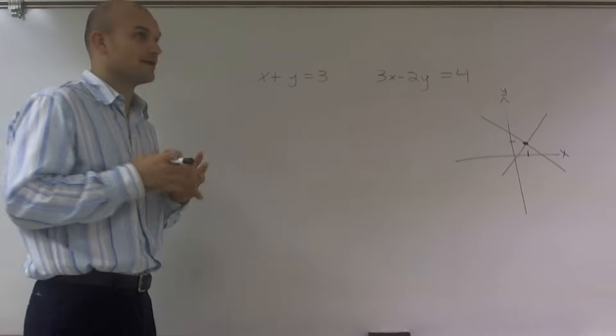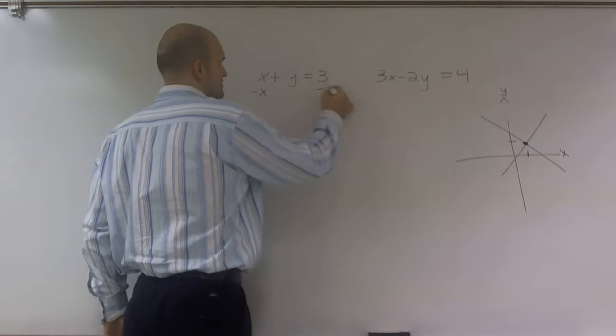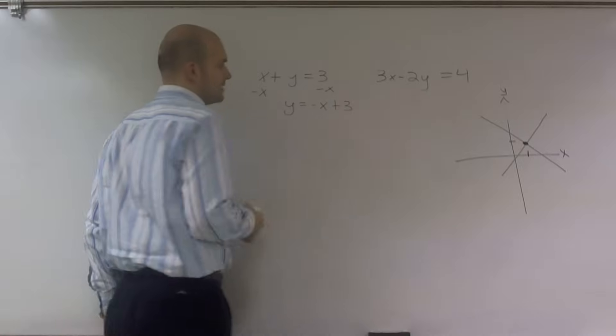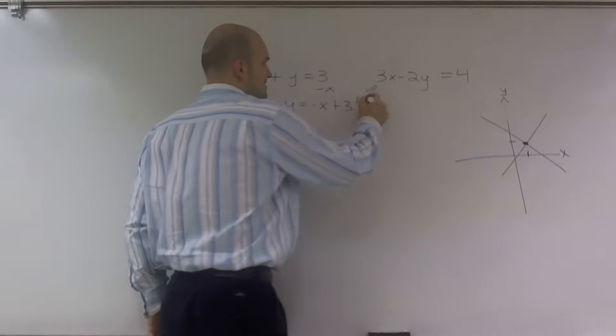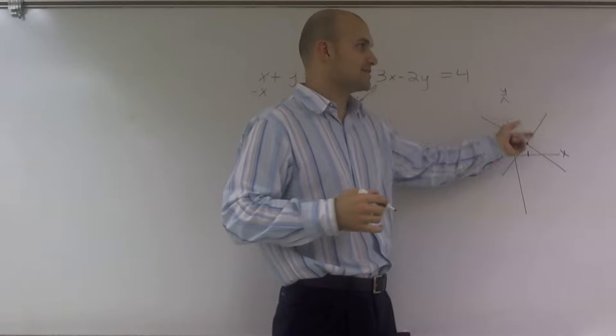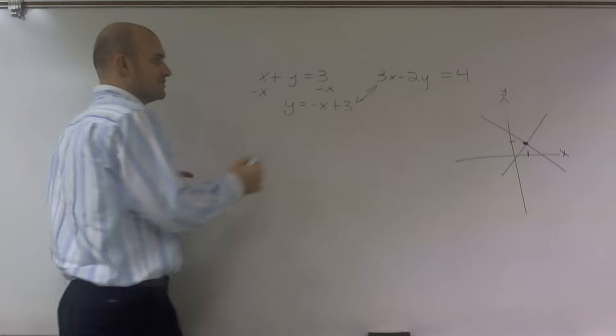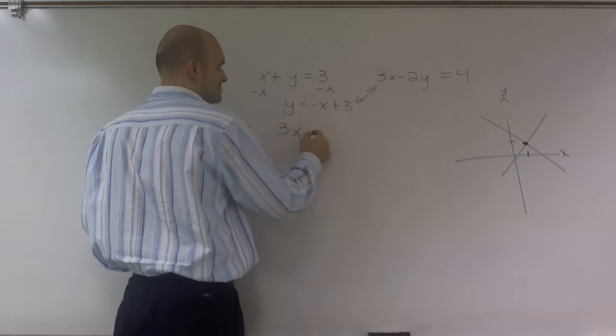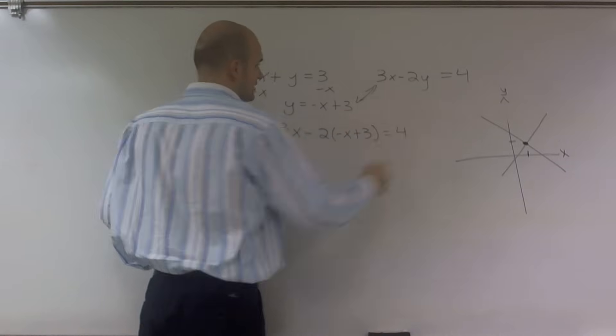So what we're going to want to do is here, let's solve for y. If I subtract the x on both sides, I get y equals negative x plus 3. Okay? So now, if I want to set these equal to each other, I know that my y values have to be the same for both of these equations. My two y values have to be exactly the same. So therefore, what I'm going to do is plug this equation into the other one. So I'll obtain 3x minus 2 times negative x plus 3 equals 4.